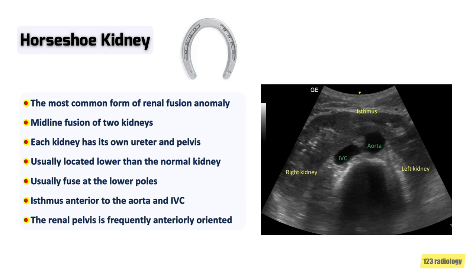It is usually located in a lower position than the normal kidney. The two kidneys usually fuse at the lower poles by a connecting band of renal tissue called an isthmus. The isthmus is usually situated anterior to the aorta and inferior vena cava. The renal pelvis is frequently anteriorly oriented. A transverse midline view of the aorta is optimum for better visualization of the connecting isthmus.